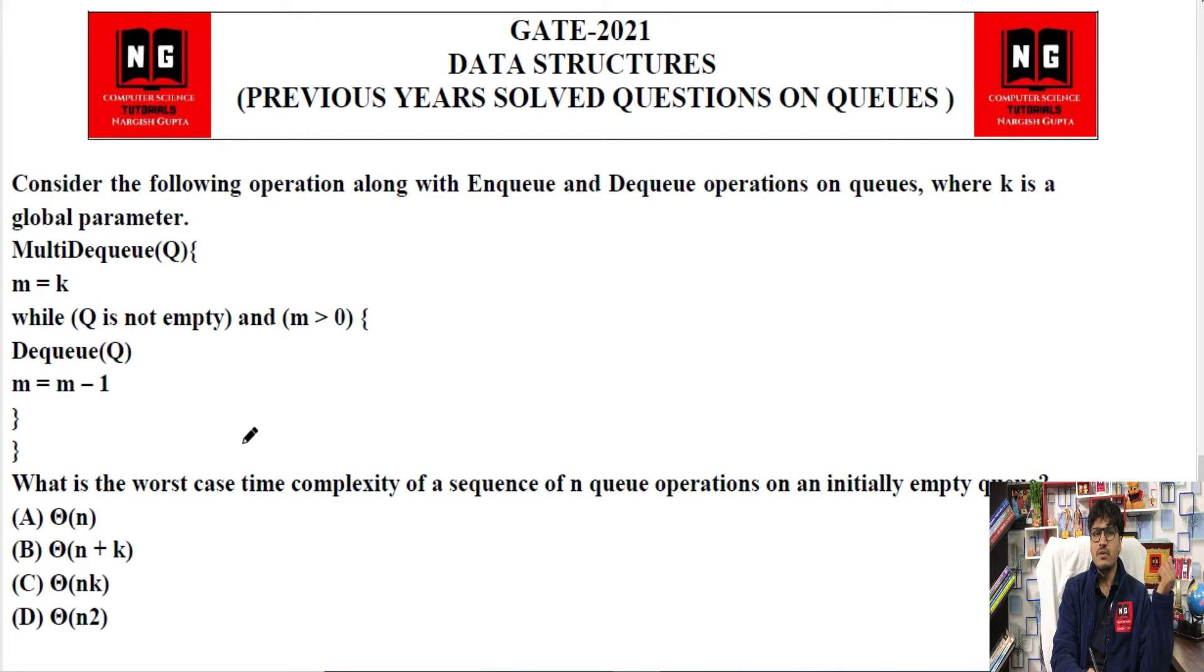So next question, this is the last question. Consider the following operations along with enqueue and dequeue operations on a queue, where k is a global parameter. K is given as a global parameter. And here a function is called multi dequeue. So in multi dequeue, whatever value k has, it stores it in m here. And here, while q is not empty, if q is not empty, and if m is greater than zero, then this condition will be true.